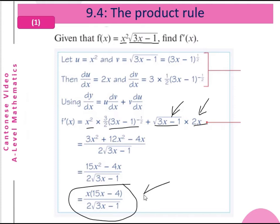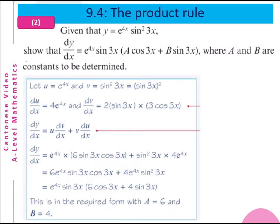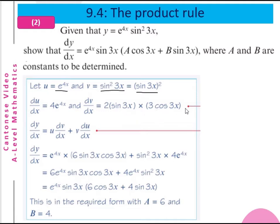This is dy/dx, which is f'(x) of this function. Example 2: given that y equals e to the power of 4x times sin²(3x), show that dy/dx equals e^(4x)·sin(3x) multiplied by (a·cos(3x) plus b·sin(3x)), where a and b are constants to determine. Let u be e^(4x) and v be sin²(3x), which is sin(3x) to the power of 2. So du/dx equals 4e^(4x).